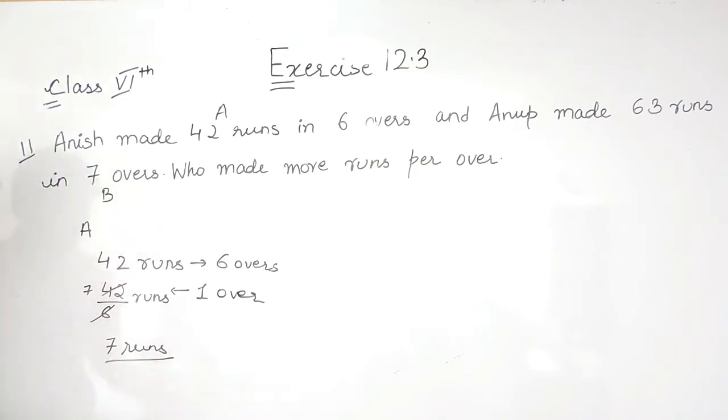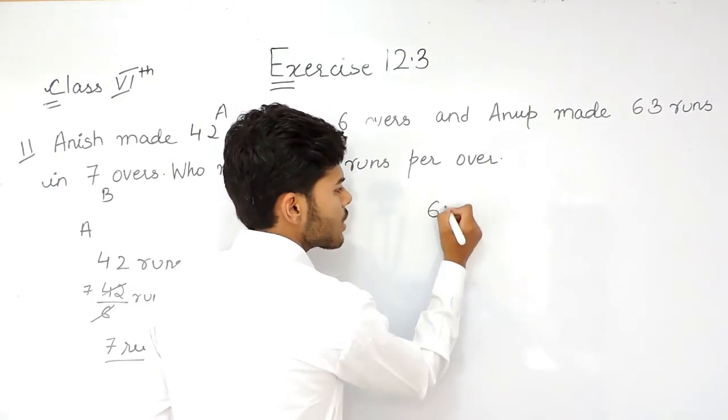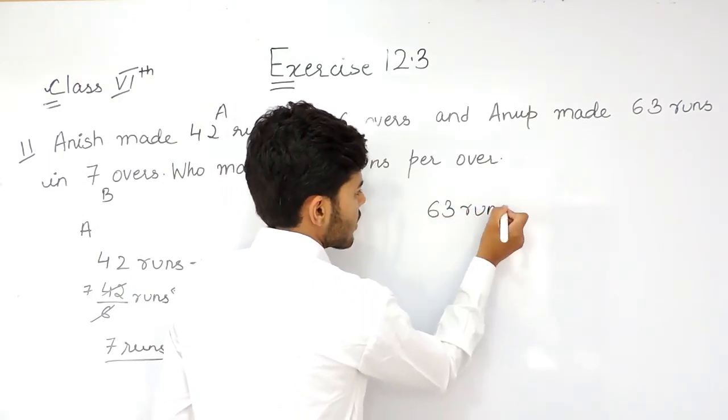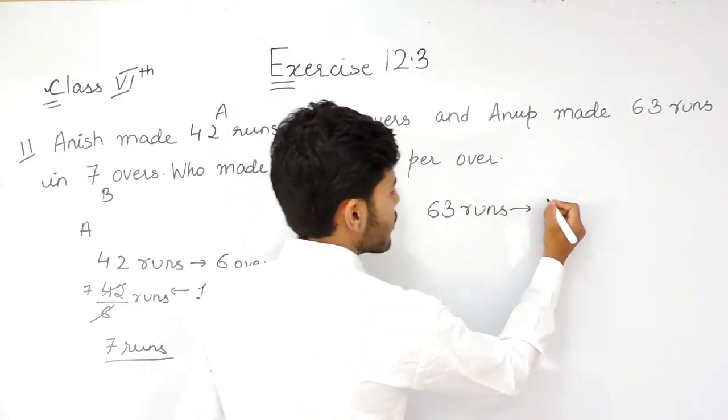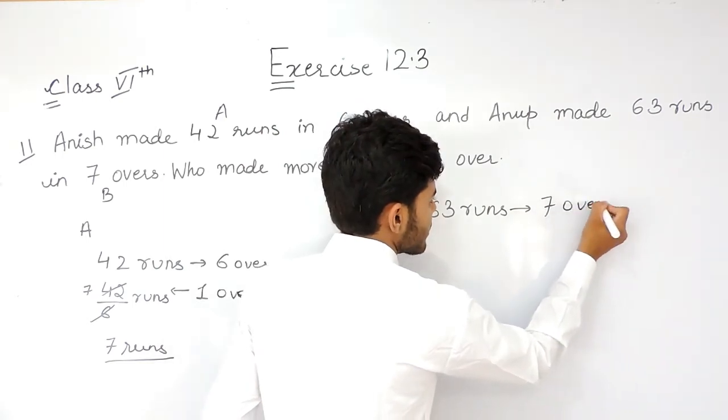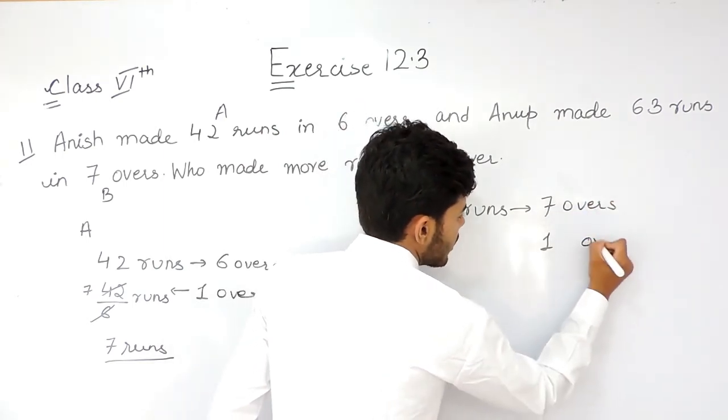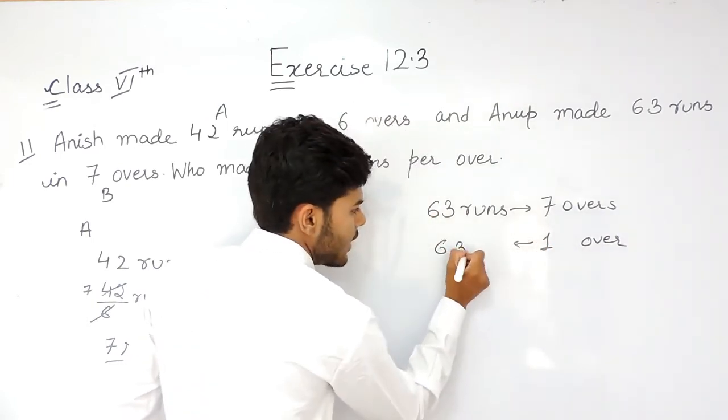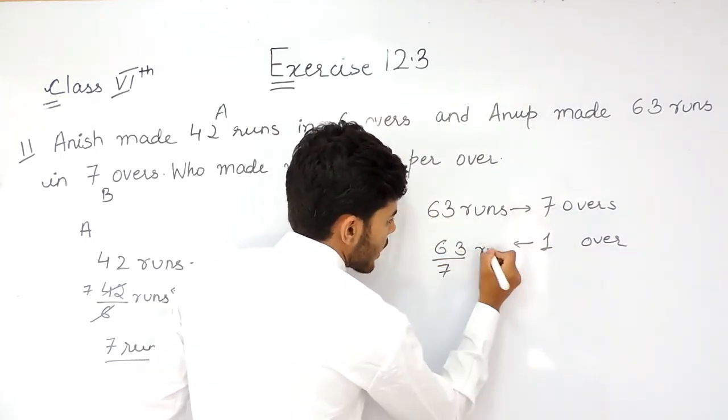So, Anish scored 7 runs per over. Now, for Anup, he scored 63 runs in 7 overs. Means in 1 over, he would have scored 63 upon 7 runs.